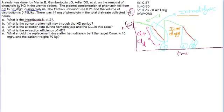So let's take a look at the example here. Here is a study done by Martin and Gambertoglio et al. They are looking at the hemodialysis, the removal of the phenytoin drug by hemodialysis in uremic patients. The plasma concentrations fell from 3.9 to 3.5 mg per liter during dialysis. So the first question is we have to find out the t-half. So t-half is equal to 0.693 by k. Do we have the information of k? No, we don't have it. So that's what we're going to find out, k.